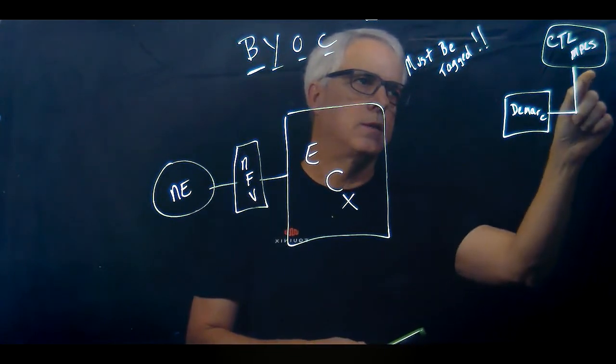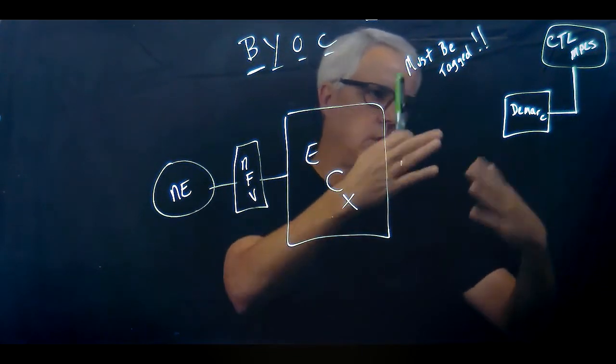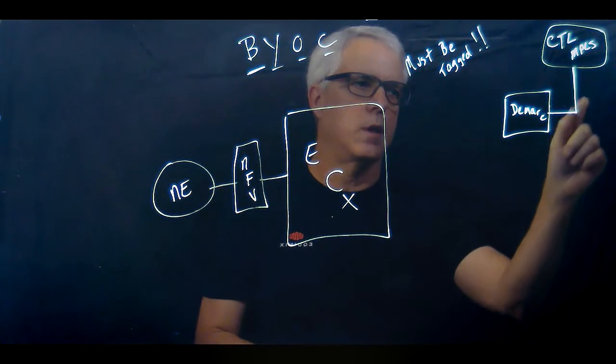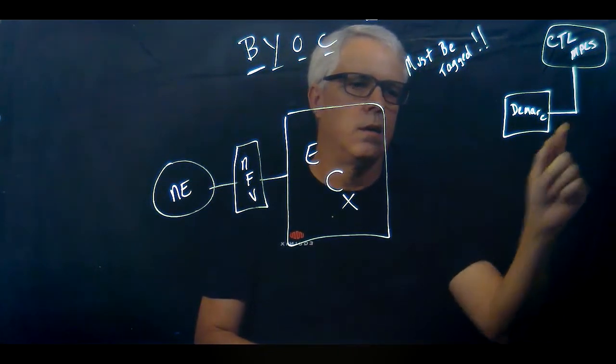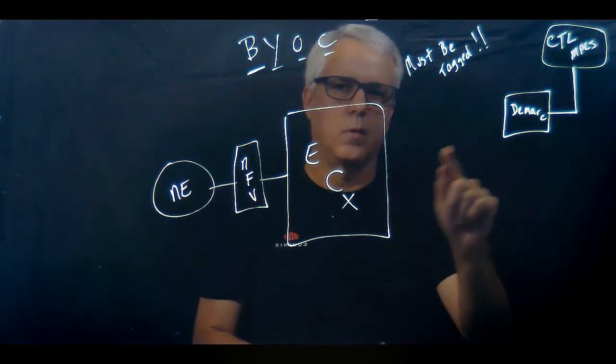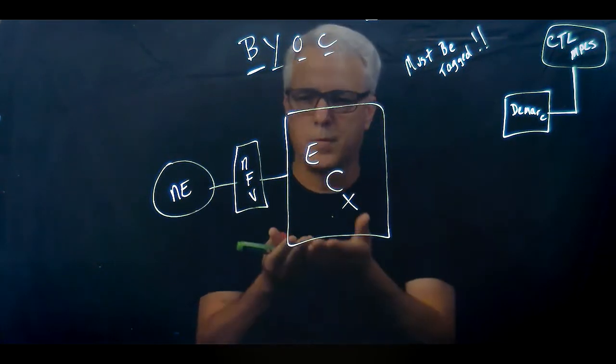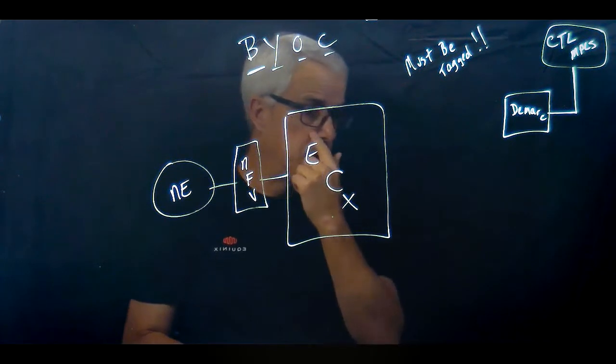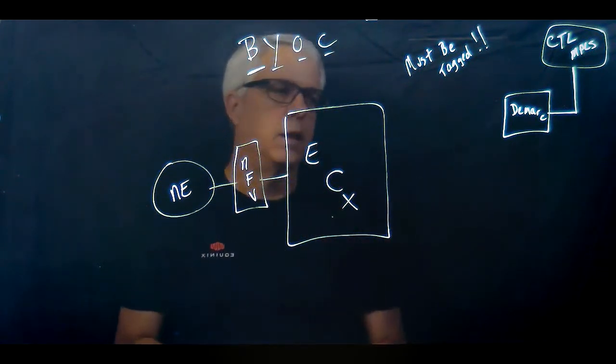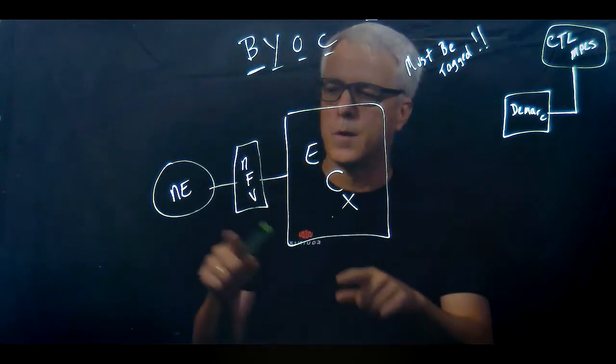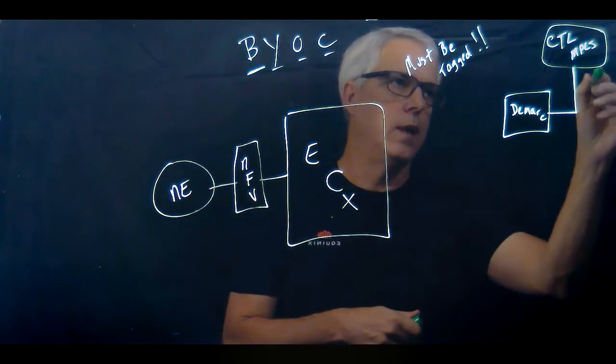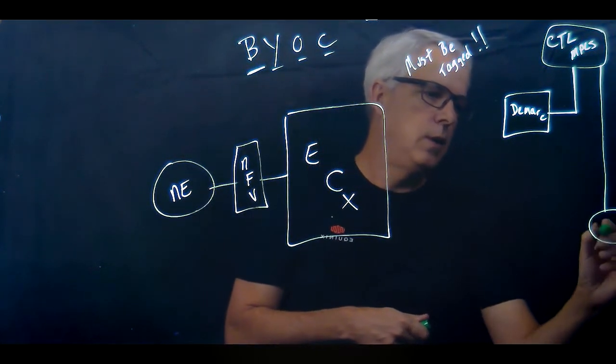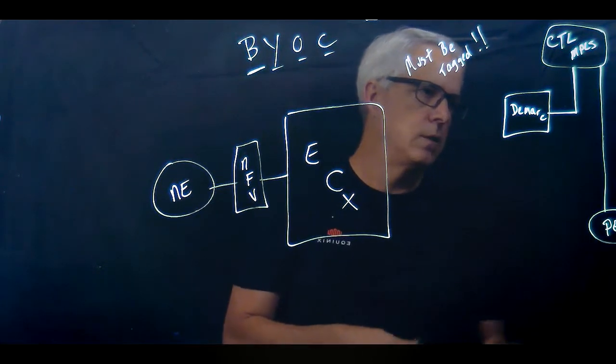In this case, the customer reached out to CenturyLink, ordered the circuit. The circuit has been ordered and it is sitting here waiting for the last bit of layer one connectivity that needs to be done before we can start building layer two underlay. And then at the end of the day, we'll establish layer three peering over this construct from the network edge device. Let's go ahead and draw it in now as a PE router on the provider side.